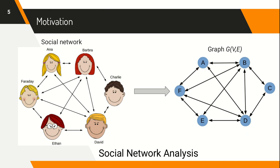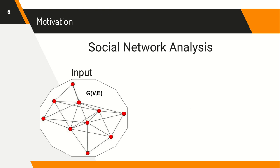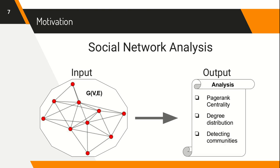An approach often used as a solution is to model the interactions among the members of the population as a social network and study the properties of the emergent network. Social network analysis is the broad umbrella that encompasses the common set of tools and techniques developed to study the structural properties of the graph representing a social network. Each entity is represented by a node and the interaction between two entities is captured by an edge between the corresponding nodes. Most tools and techniques assume that the entire graph is available as input.